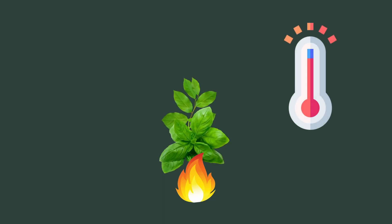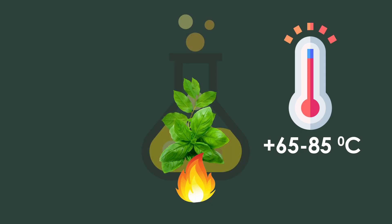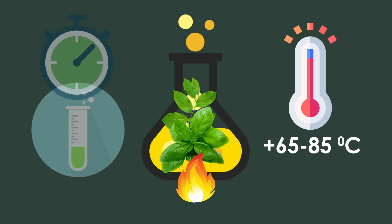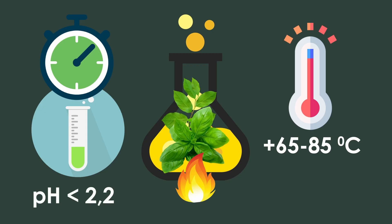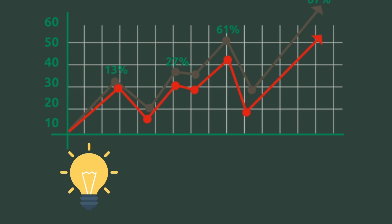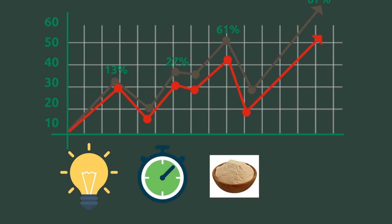Conventional pectin extraction methods involve prolonged heating of pectin-containing plant material at temperatures of 65 to 85 degrees Celsius in an acidic medium with a pH below 2.2 for several hours. However, these methods are characterized by high power consumption and long duration, providing only moderate pectin yields — normally not more than 20 to 30 percent.